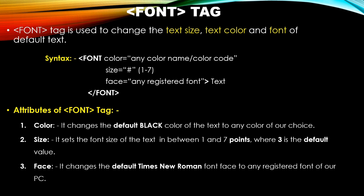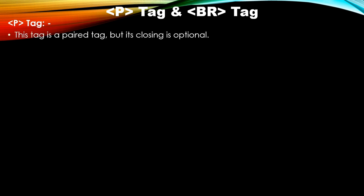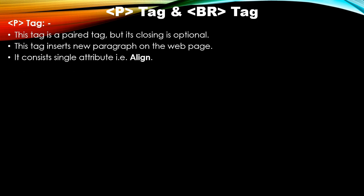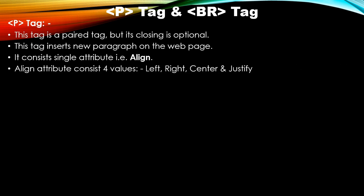Another tag is the p tag and br tag. The p tag stands for paragraph; br stands for break. The p tag is a paired tag but its closing is optional. This tag inserts a new paragraph on the web page and you can use multiple p tags to insert multiple paragraphs. The p tag has a single align attribute with values left, right, center, or justify — the default is left.